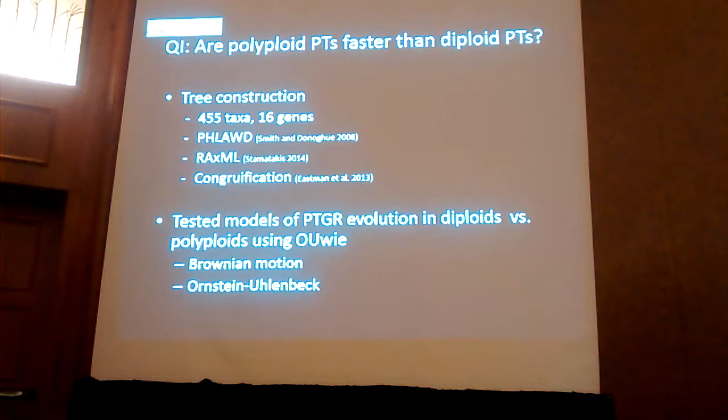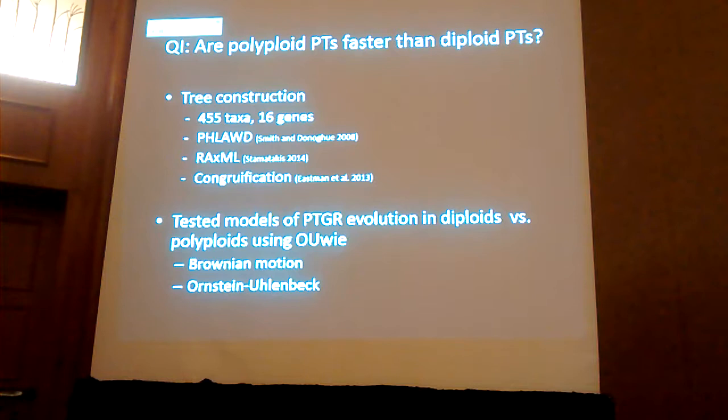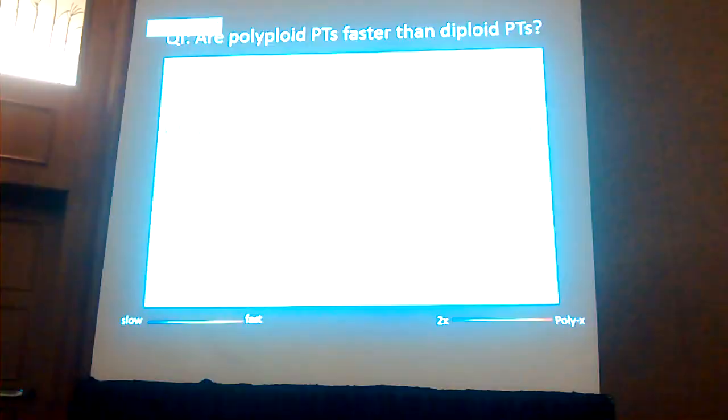What I did was I made a phylogenetic tree with 455 taxa for which we had pollen tube growth rate data. I used BLAST to download sequences and align sequences from GenBank and extract them. Then I compared each of the data from the tree, and used OUwie to test models of pollen tube growth rate, distinguishing diploids versus polyploids, using different Brownian motion models and multiple polyploidy growth rate regimes.